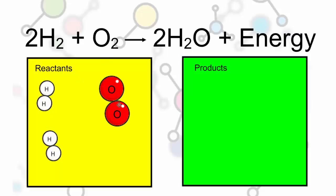and one molecule of oxygen. They're going to undergo a chemical reaction which yields, which is what this arrow means, two molecules of water plus some energy. So let's see how that happens.